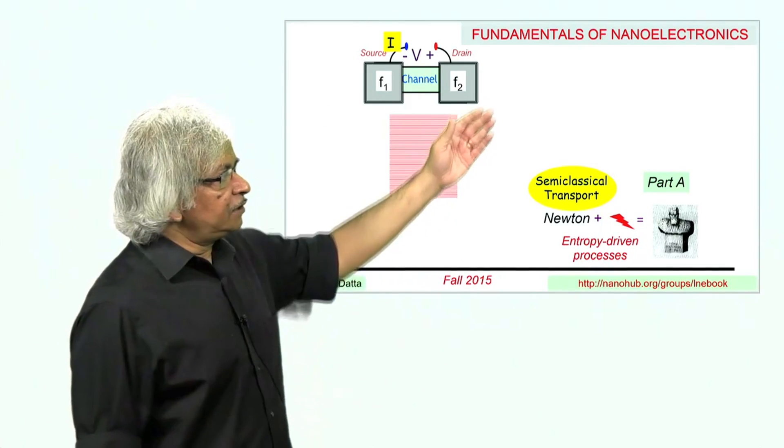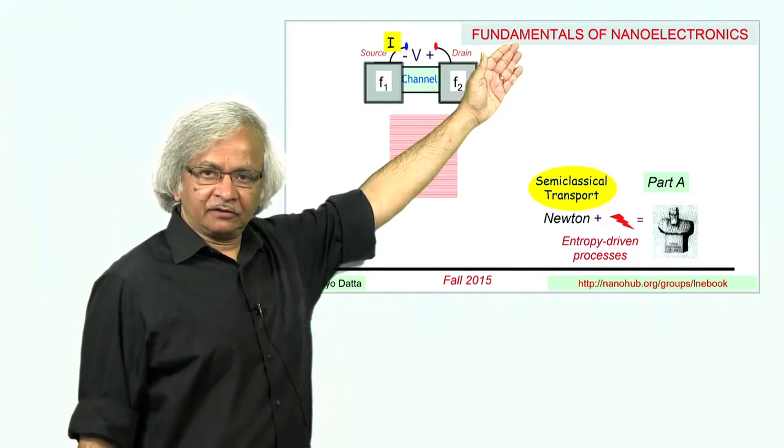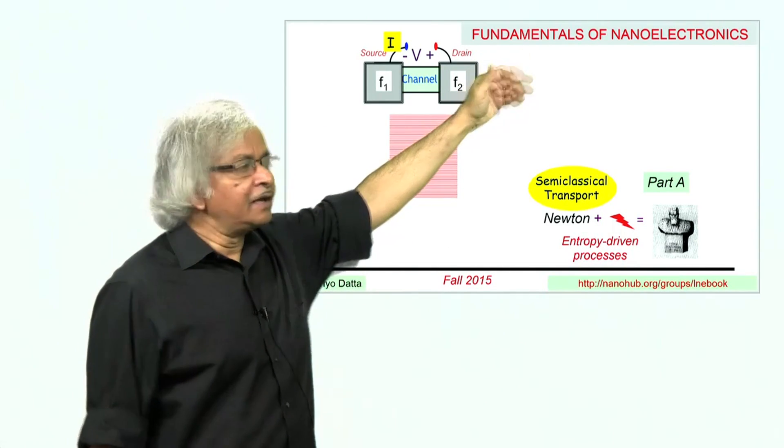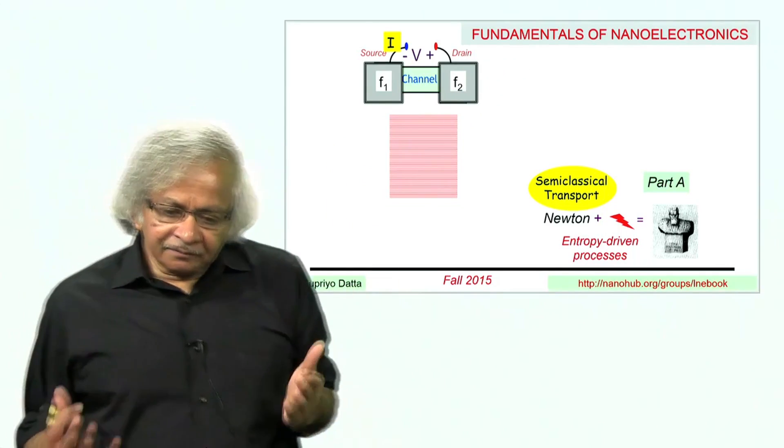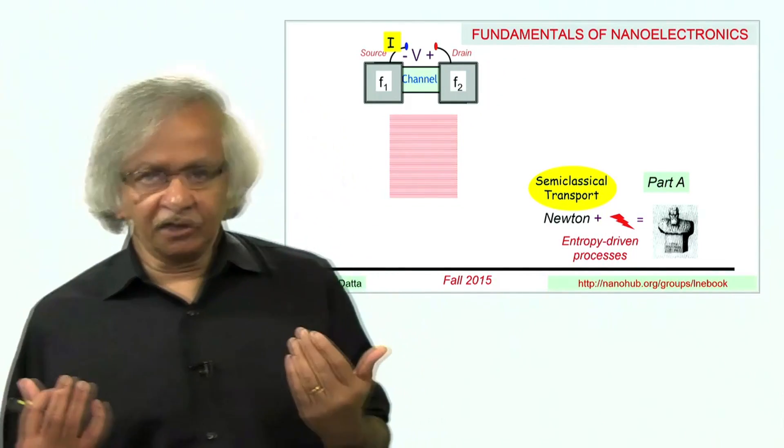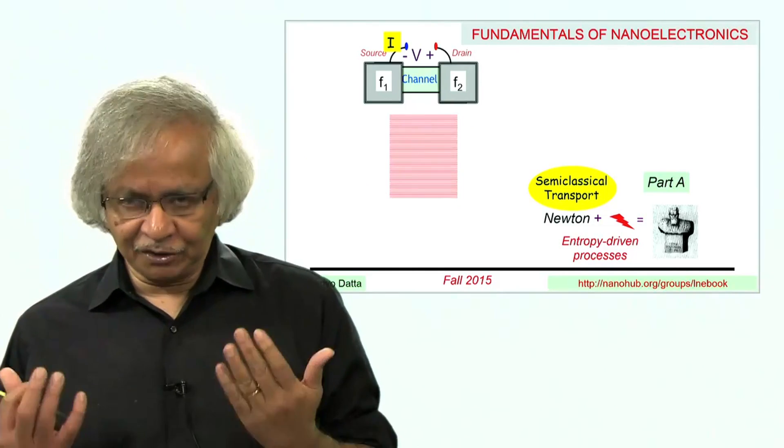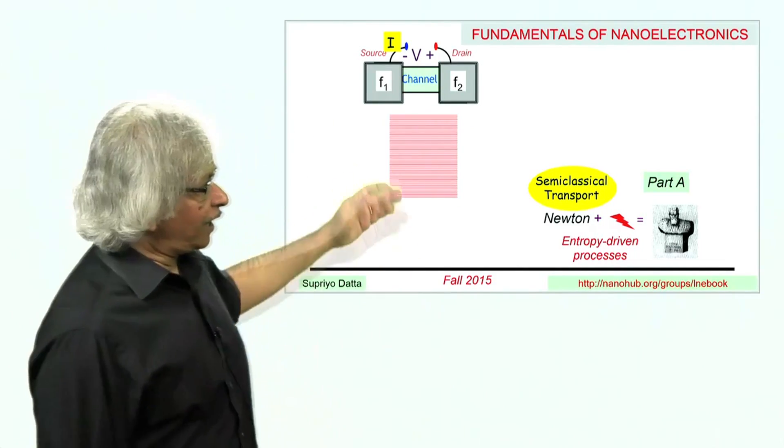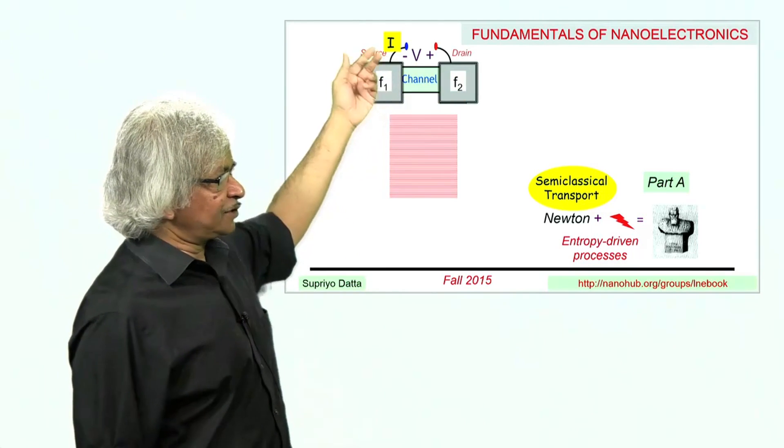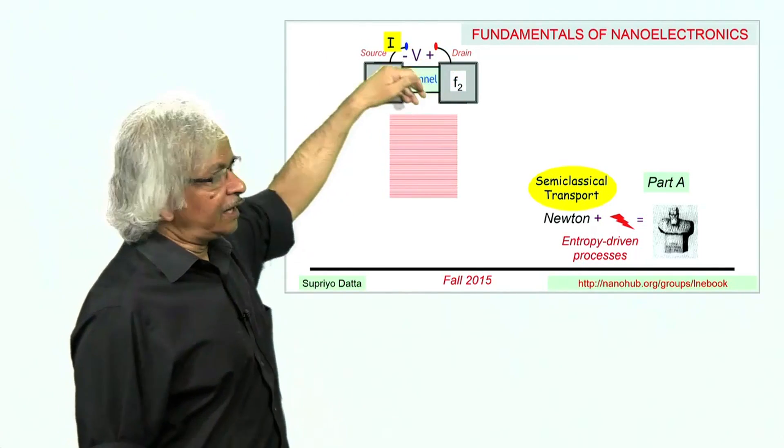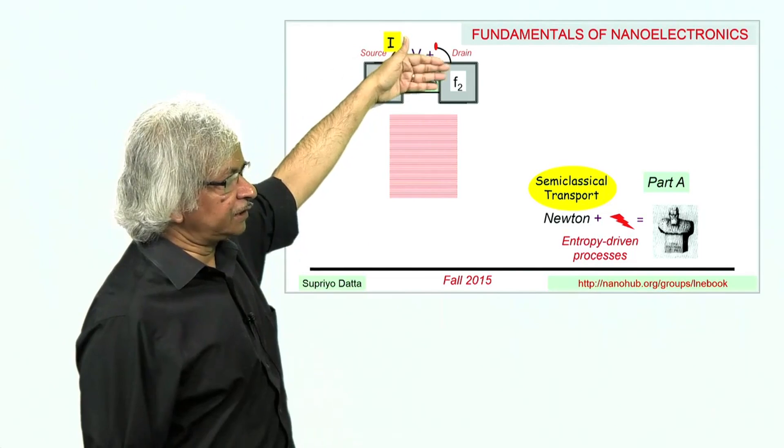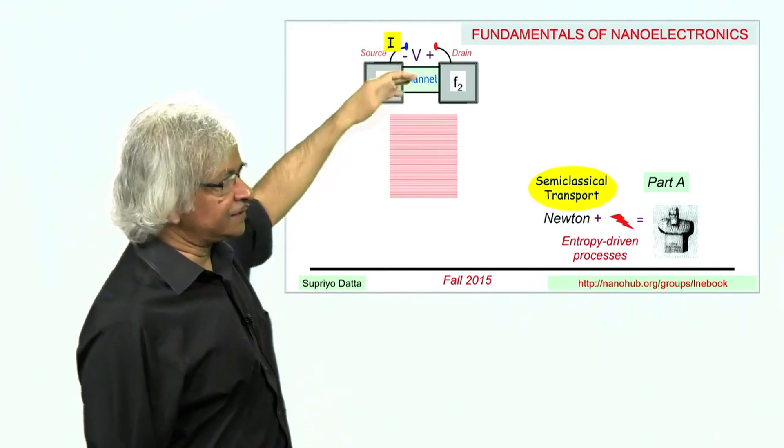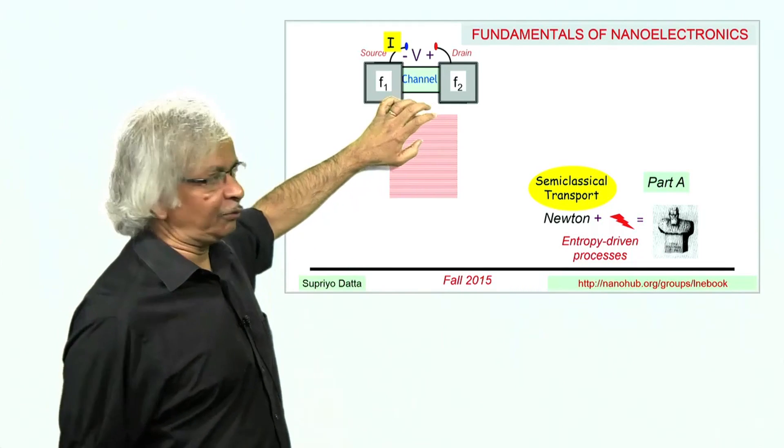Welcome to Part B of our course on the fundamentals of nanoelectronics. Here we're interested in understanding the nature of current flow in small devices, where we have two contacts—the source and the drain—and electrons flow from one to the other through the channel, which provides a sort of electronic highway.